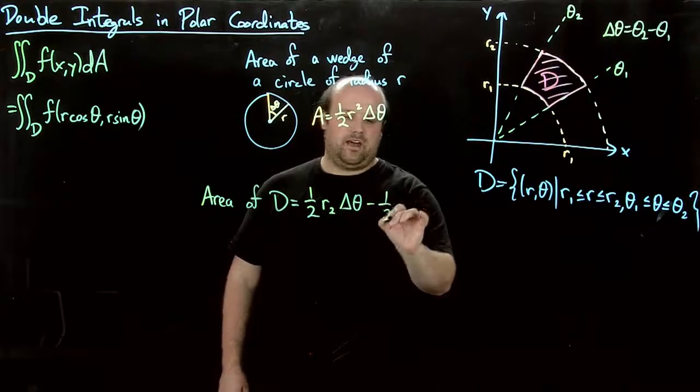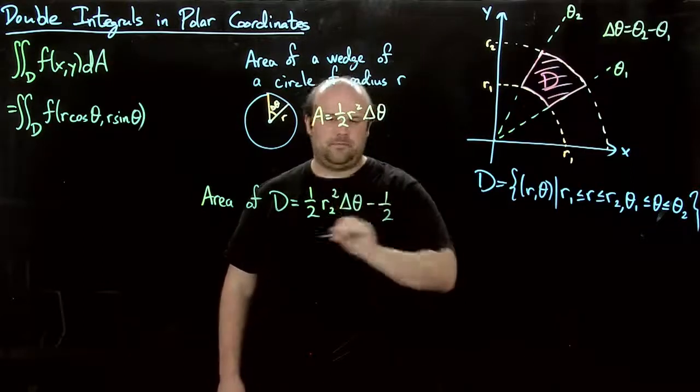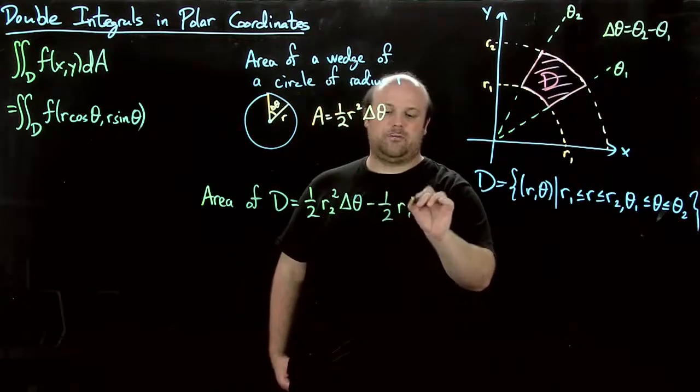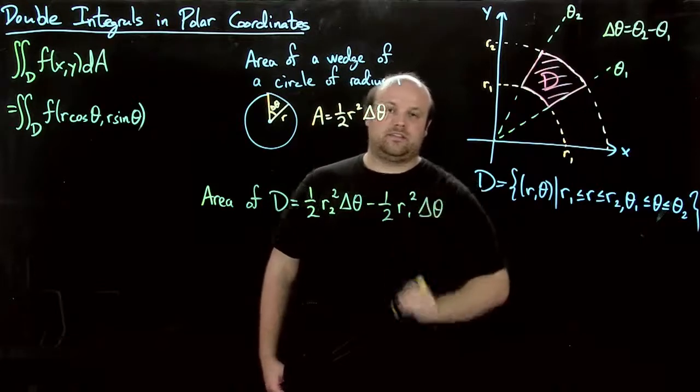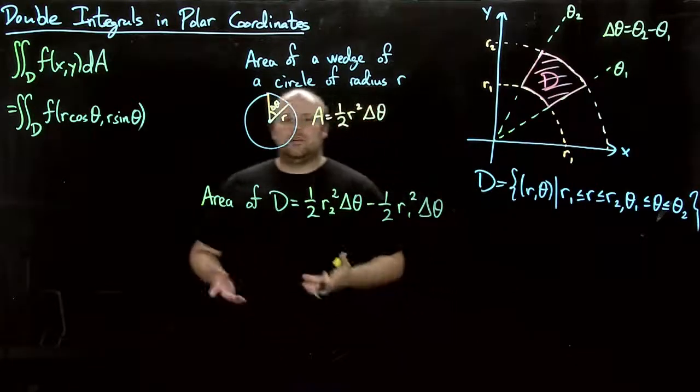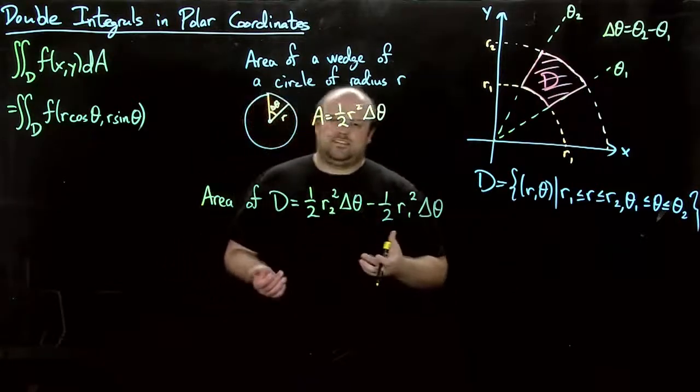Minus one-half, oh, there's a square there, minus one-half r one squared delta theta. But, okay, that's a little bit complicated.